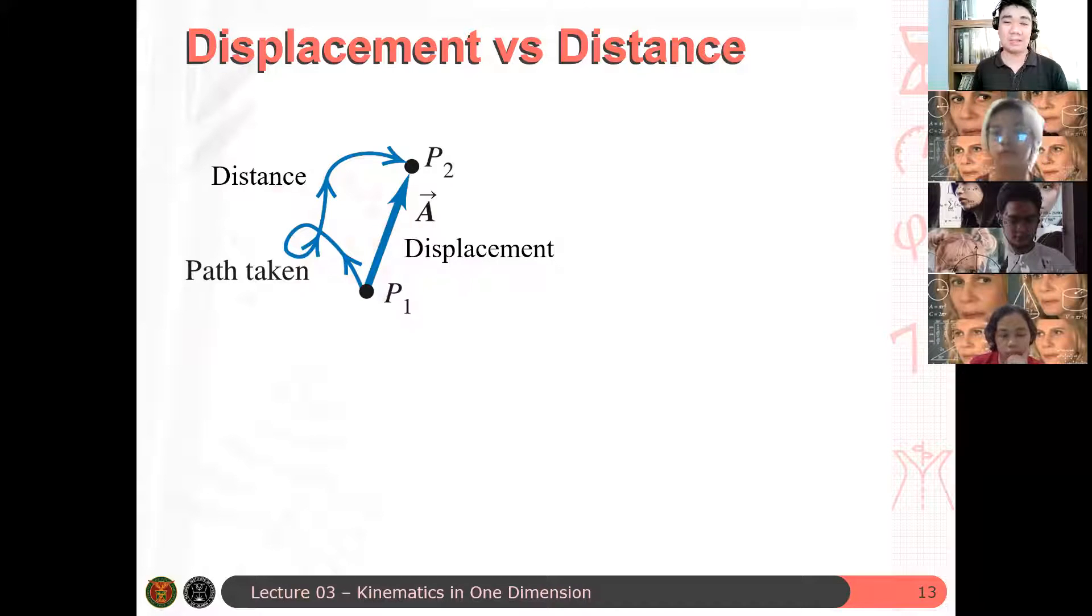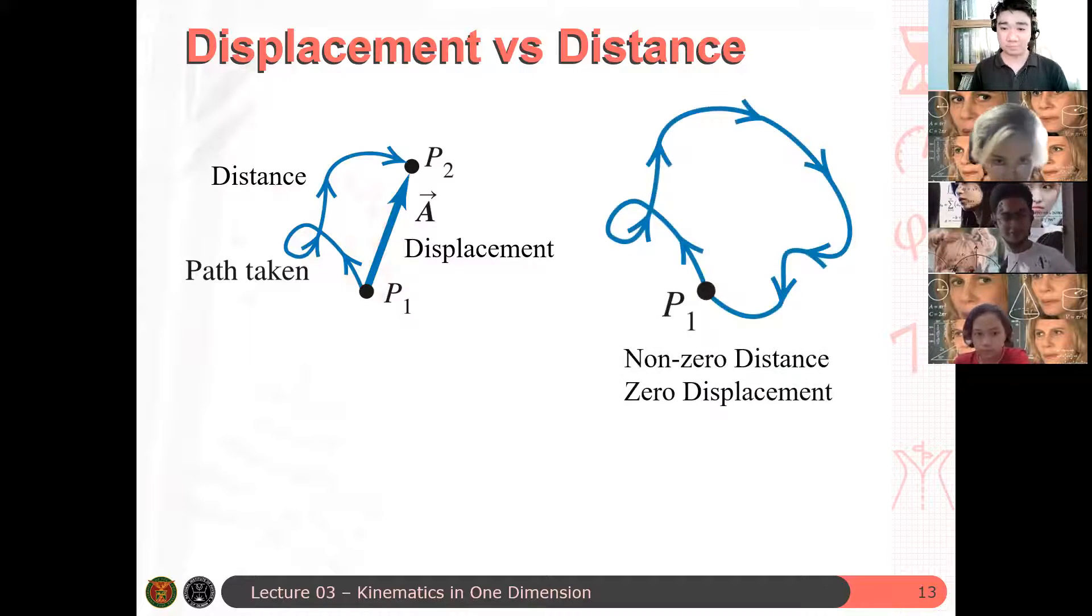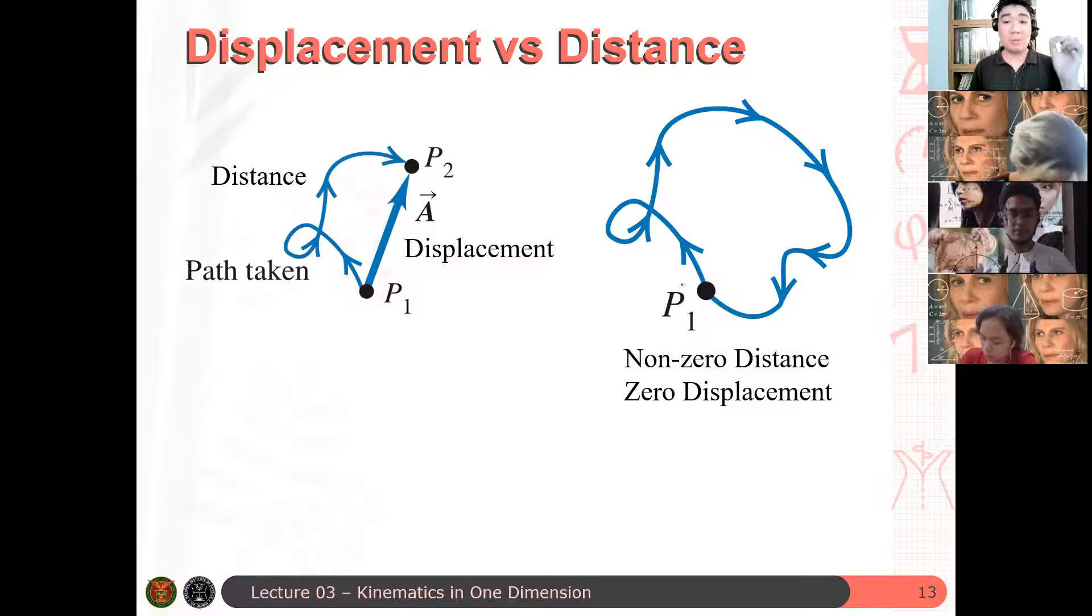Of course, the obvious answer is that, well, displacement is a vector, well, distance is a scalar. But, for example, here, P1, a particle moves along this path here, but returns to its original position. Since what, since the displacement, why is the displacement zero here? Obviously, because it returned to its original position.